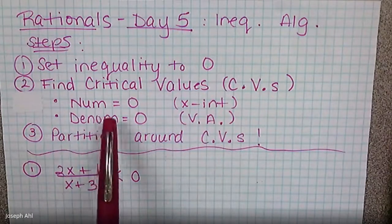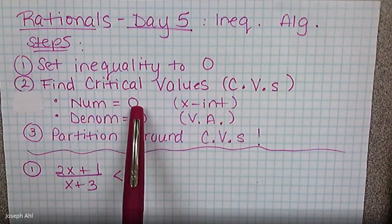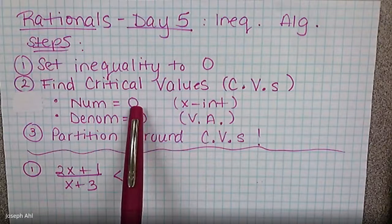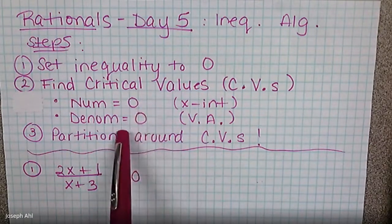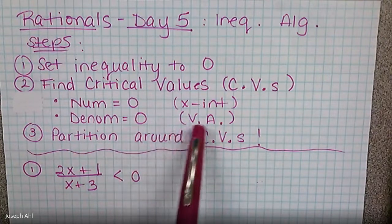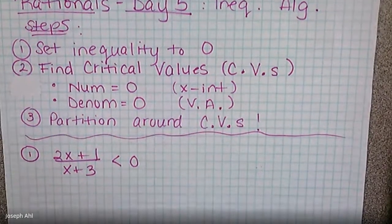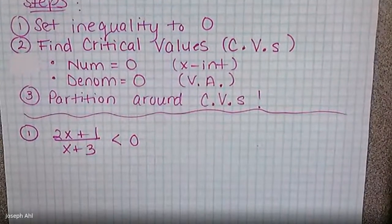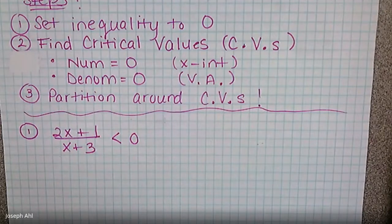To find the x-intercepts, you're essentially just setting the numerator equal to zero. The reason you're allowed to do that is when a rational function equals zero, it's because the top of the fraction equals zero. Whatever makes the bottom equal to zero gives us vertical asymptotes. In step three, once you decide your critical values, place them on a number line and then test values to see where you are positive and where you are negative.